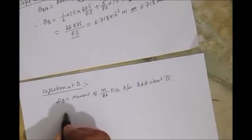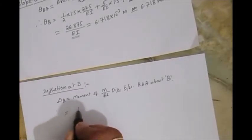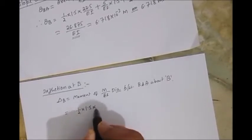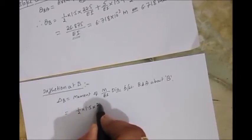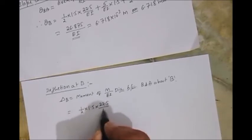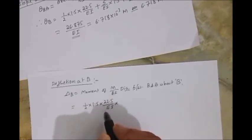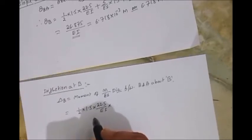Area of the triangle for region one is half into base, which is equal to 0.5 into height 22.5 by EI. We need to take the distance, that is the moment into distance.